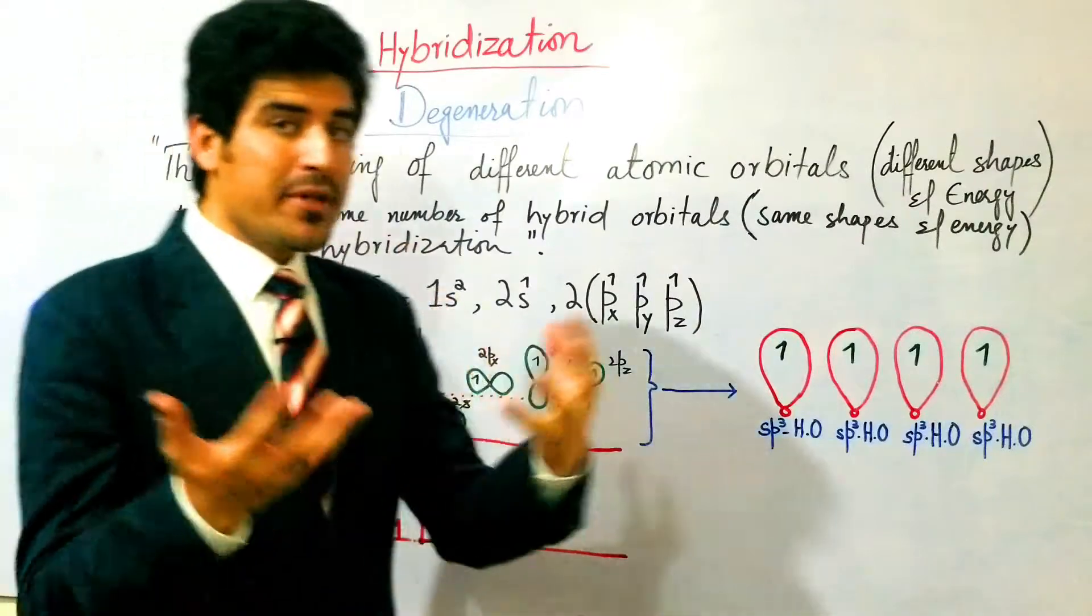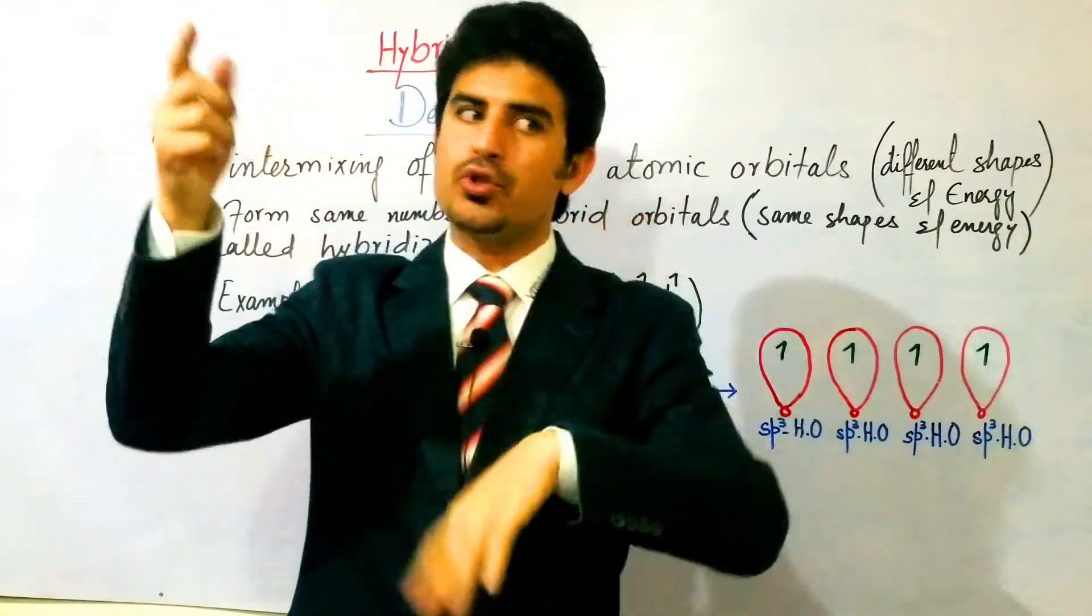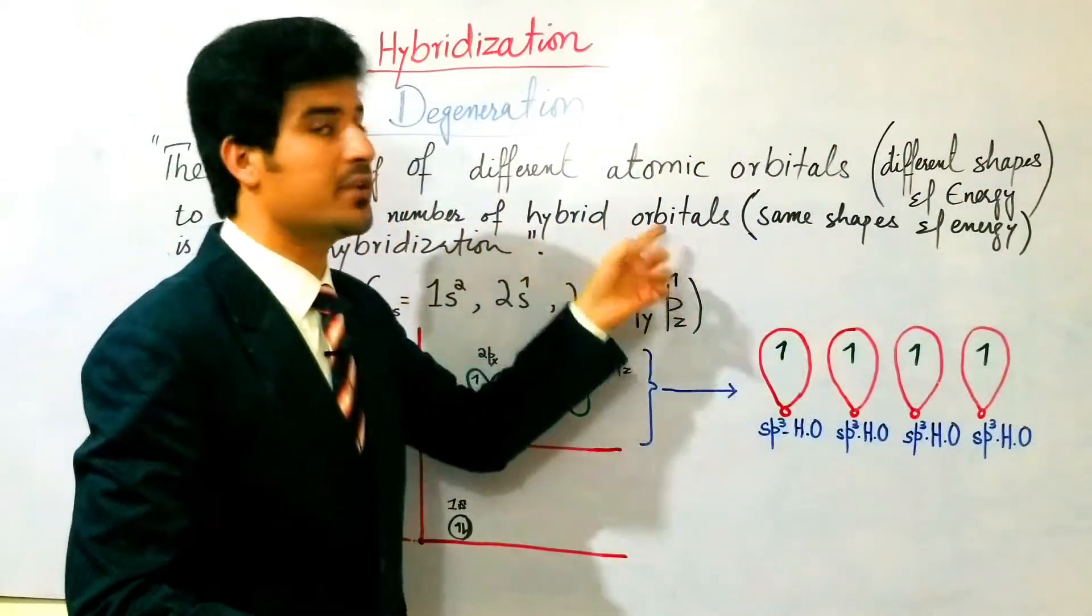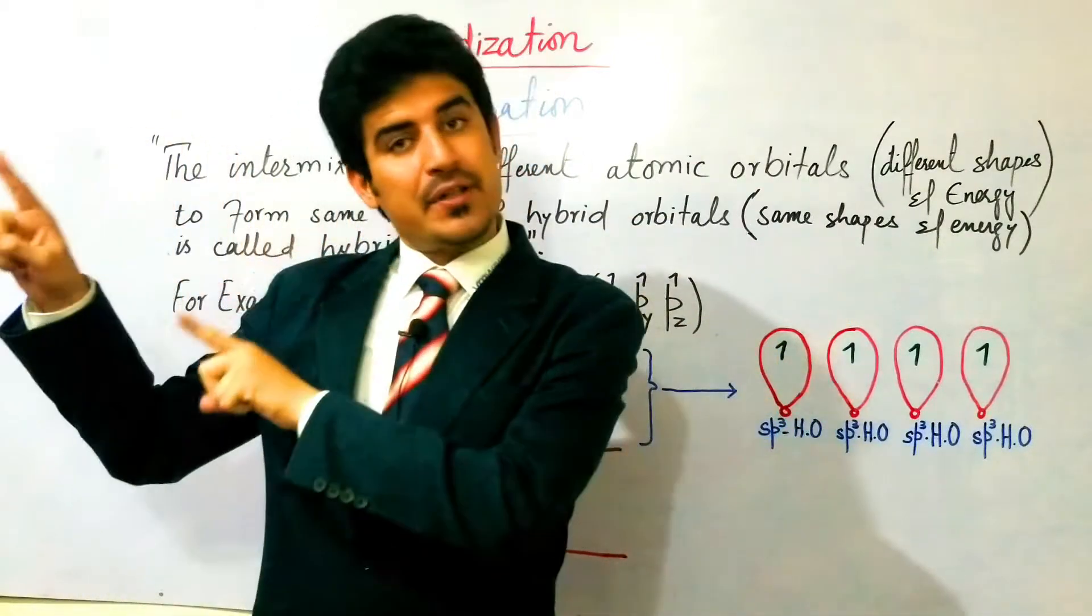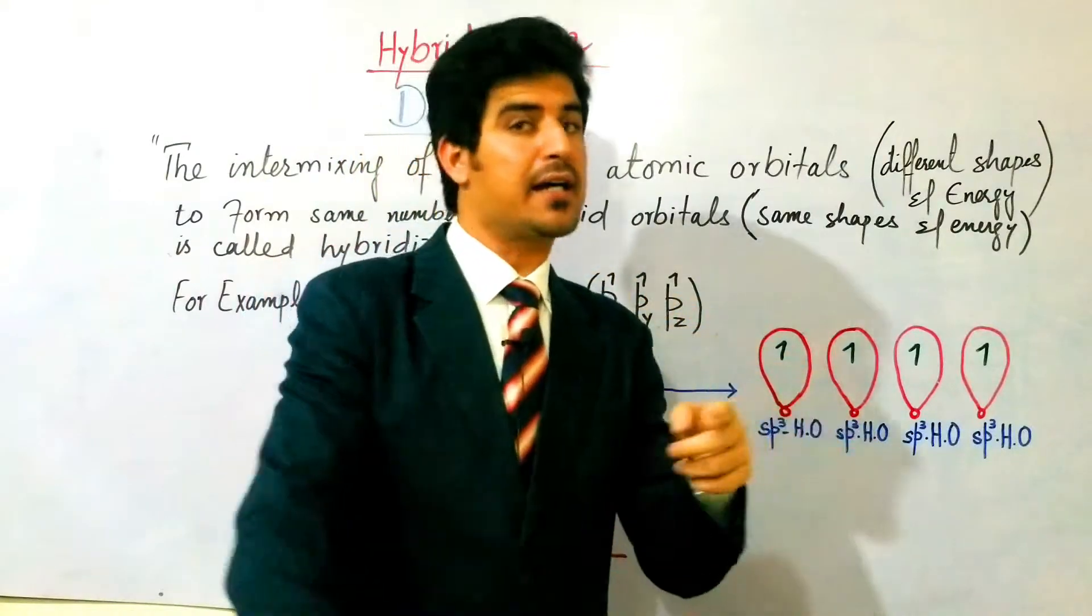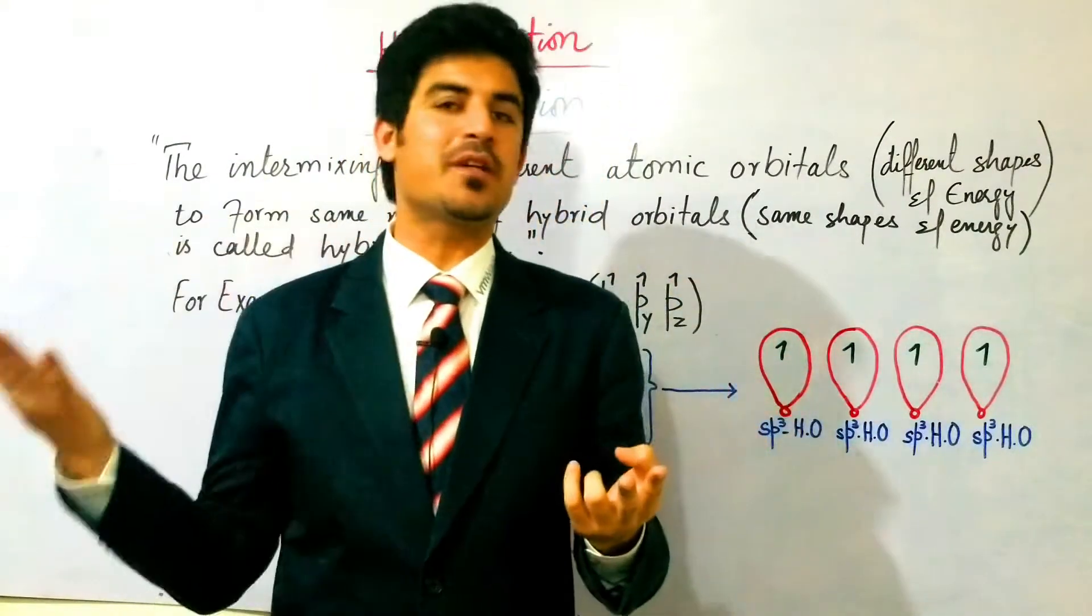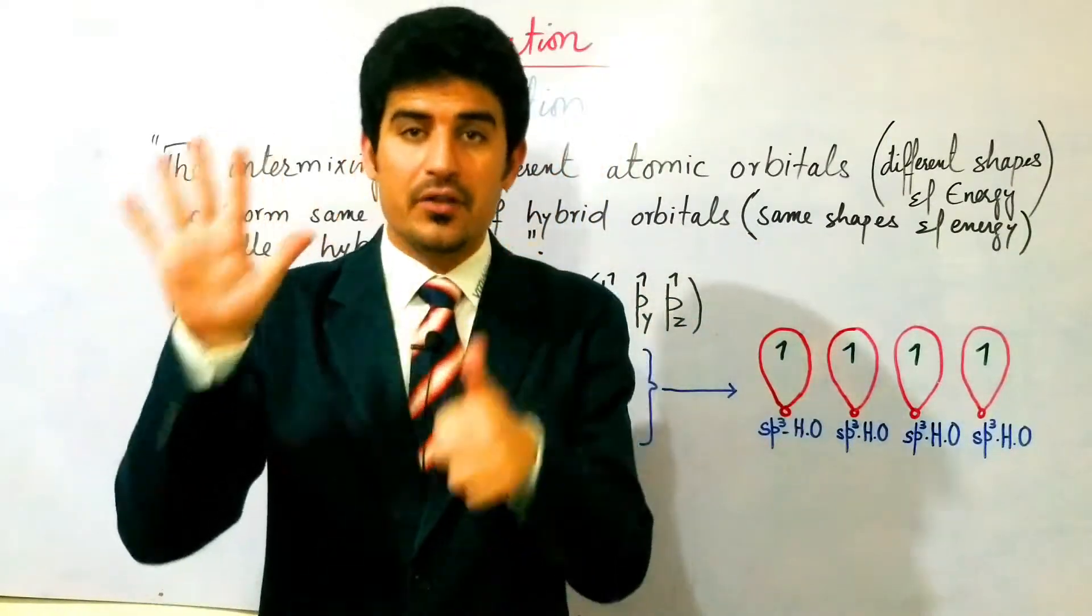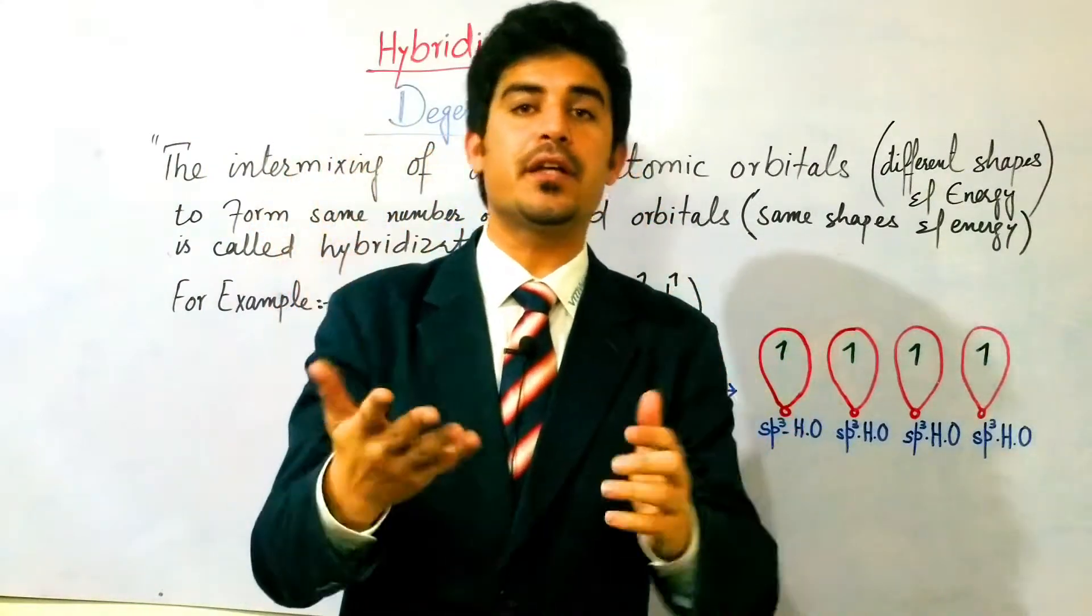The same number of hybrid orbitals will form as the number of atomic orbitals that mix. If 2 atomic orbitals mix, 2 hybrid orbitals form. If 4 atomic orbitals mix, 4 hybrid orbitals form. If 6 atomic orbitals mix, then 6 hybrid orbitals form.